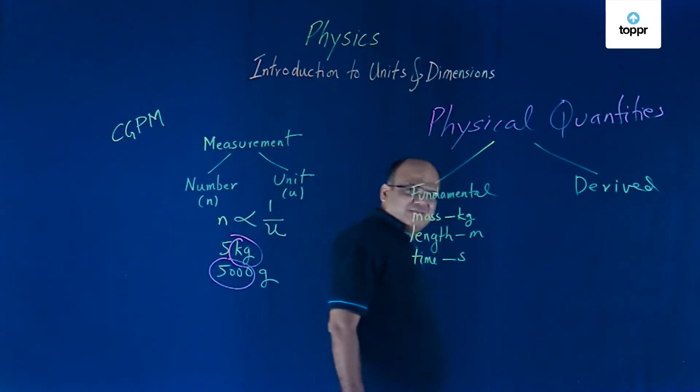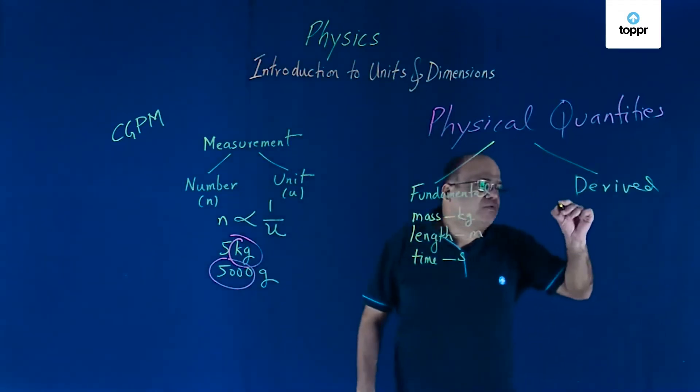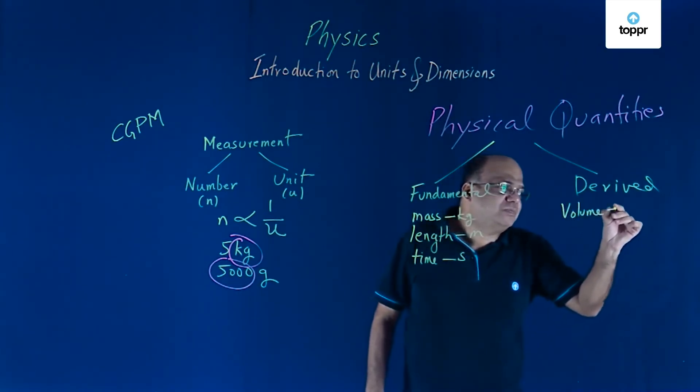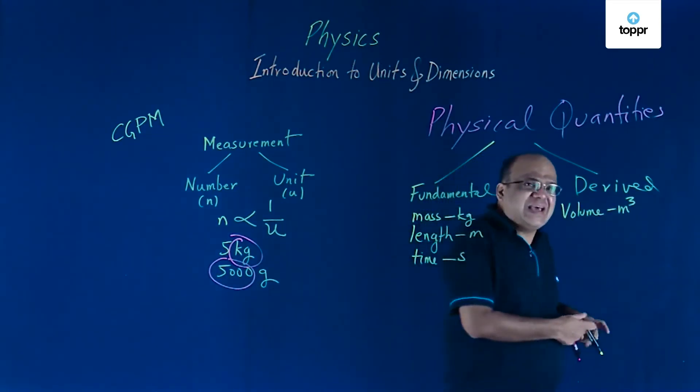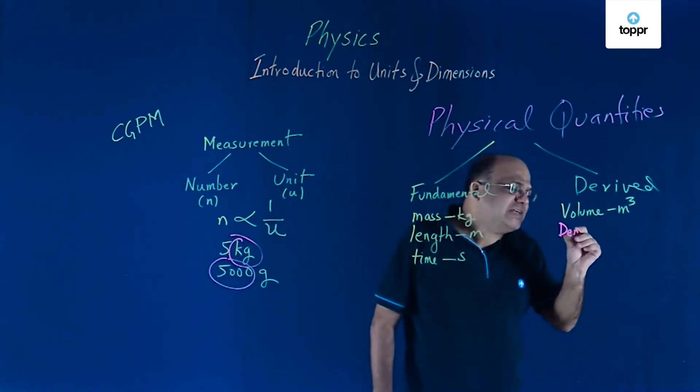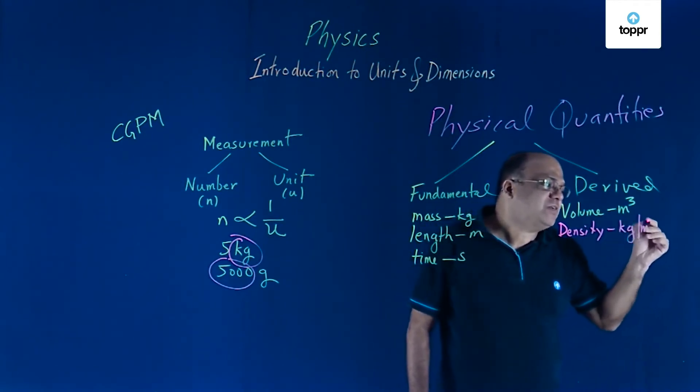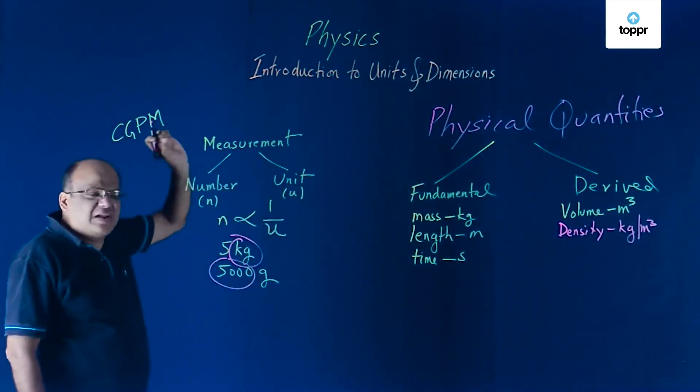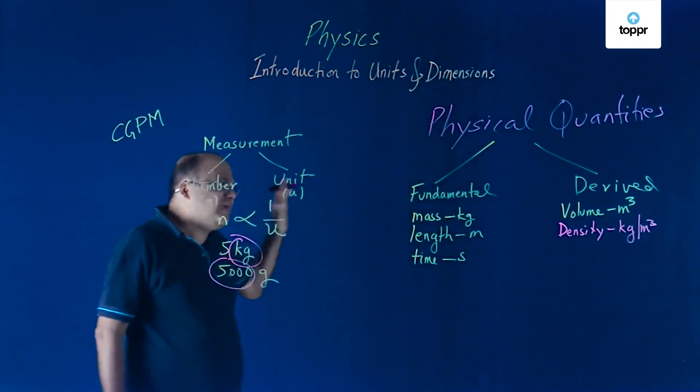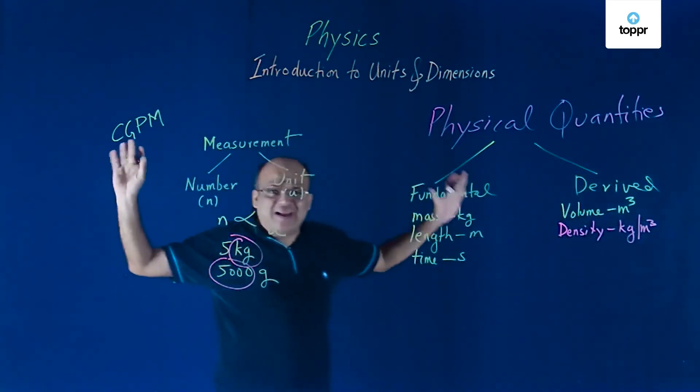There are derived quantities whose units are dependent on the units of fundamental quantities. For example, volume. Volume we measure in meter cube. That depends on the unit of length meter. Density, we measure in kg per meter cube and this depends on the unit of mass and on the unit of length. These are called derived quantities and their unit is called derived unit. Physical quantities are of two types on the basis of units, fundamental quantities and derived quantities.